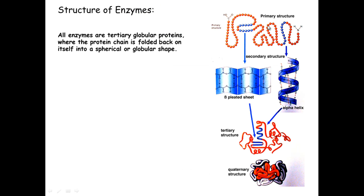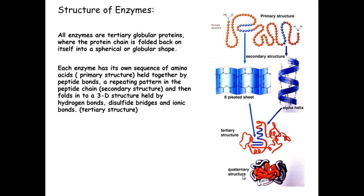What you have here is an example of the structure of enzymes. They have four different types of structures: primary, secondary, tertiary, and quaternary. The primary structure of an enzyme — because enzymes are proteins — is therefore the order of the amino acids. Each of these red dots here represents a separate amino acid drawn together. Within the primary structure, the amino acids are held together by peptide bonds.